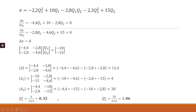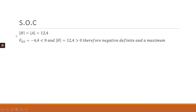We now check the second order conditions to confirm these solutions maximize profits. For a linear system, the determinant of the Hessian equals the determinant of the A matrix, which is 12.4. Checking the conditions: fq1q1 = minus 4.4, which is less than zero, and the determinant of the Hessian is 12.4, which is positive. This confirms the Hessian is negative definite, and therefore q1* and q2* do indeed maximize profits.